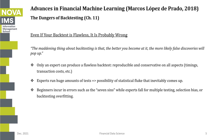The corollary is that beginners incur errors such as the seven sins we just talked about, while experts still fall for multiple testing, selection bias, or backtesting overfitting.